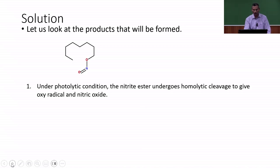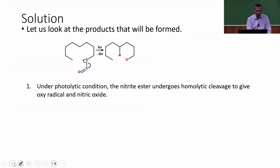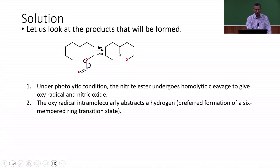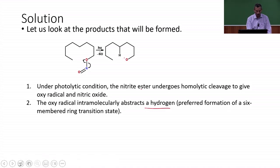Under photolytic conditions, the nitrite ester undergoes homolytic cleavage, giving an oxy radical and nitric oxide. This O–N bond is broken homolytically: one bonded electron is taken by oxygen and another is given to nitrogen, giving nitric oxide — itself a radical species — plus an oxy radical. The oxy radical then abstracts a hydrogen atom from the molecule. Because there are many hydrogen atoms throughout, the preferred formation of a six-membered transition state is key.